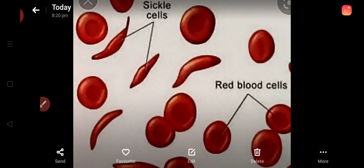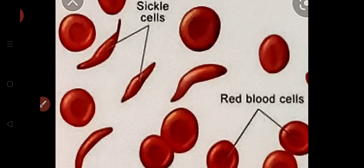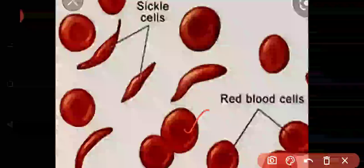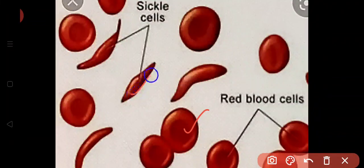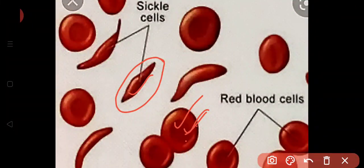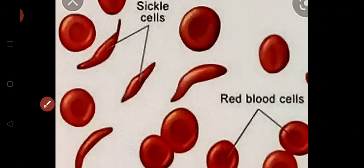Now I will show you — this is the sickle cell. These are normal blood cells (RBCs), and in sickle cell disease they become sickle-shaped like this. The sickle-shaped RBCs carry less hemoglobin and therefore transport less oxygen, so the patient remains tired and cannot do much work.